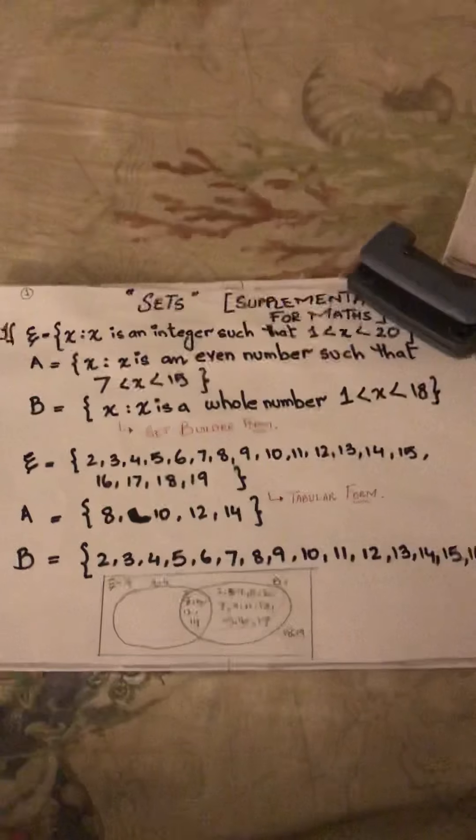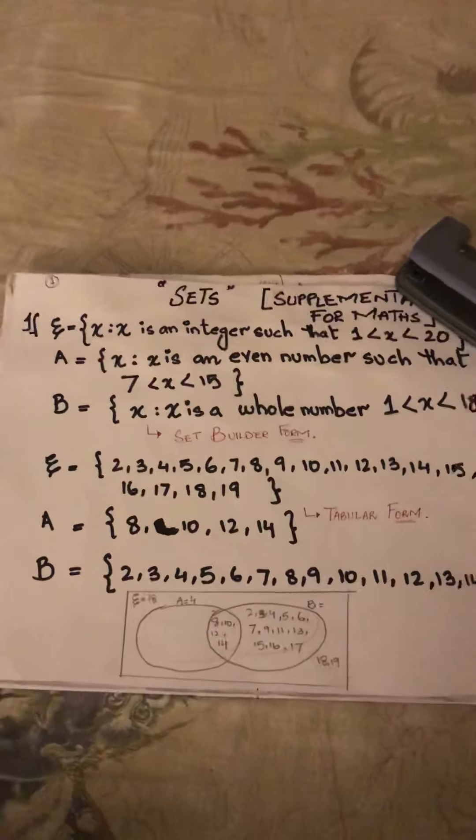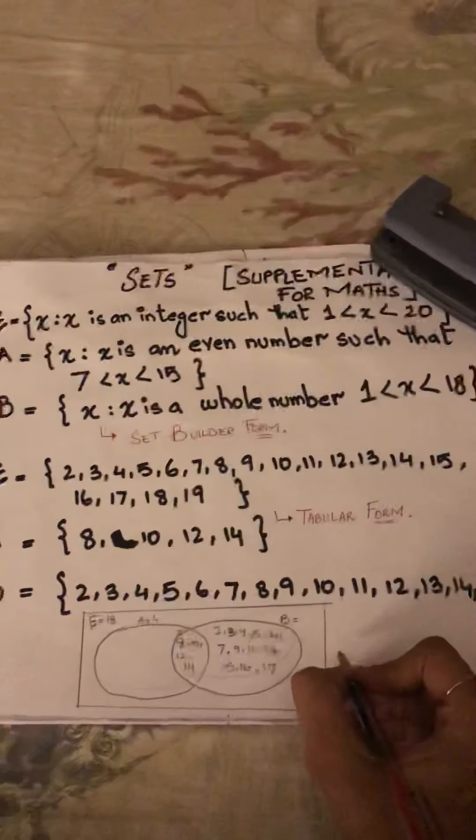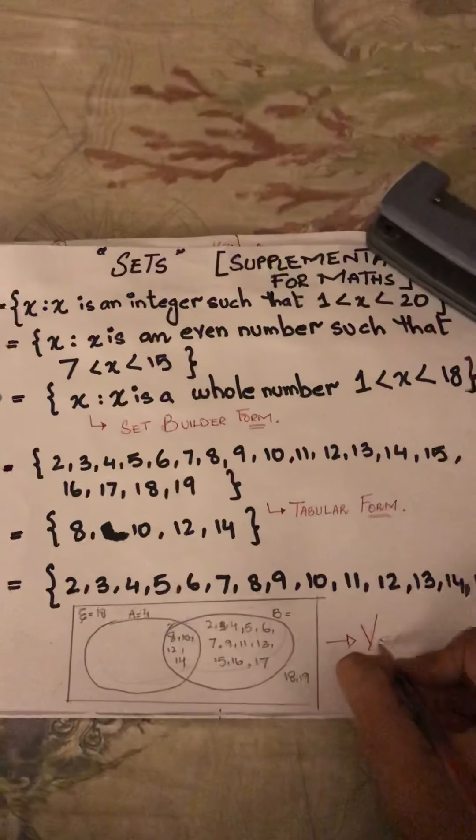This was the introduction regarding question number 4. We read the question in set builder form, we saw it in tabular form, and we observed it in the Venn diagram. This was part 1 of this question, and part 2 of the same video will cover the solutions to the remaining parts. Thank you — I hope you put in as much effort as your teachers are. Thank you so much.